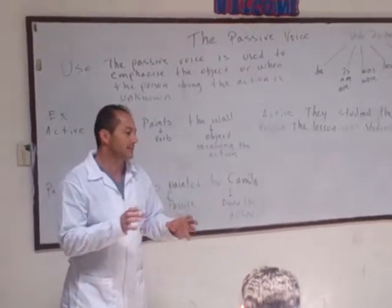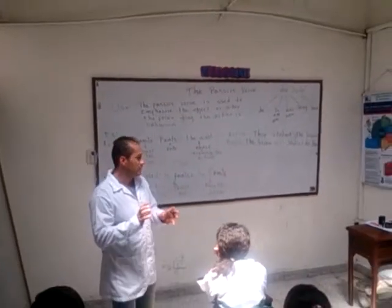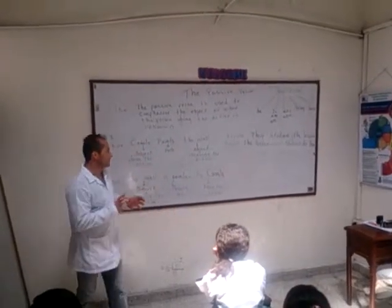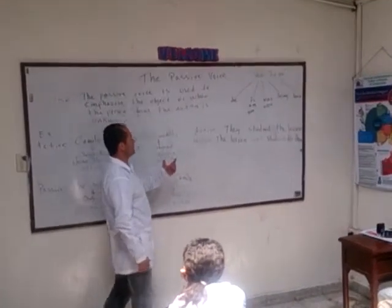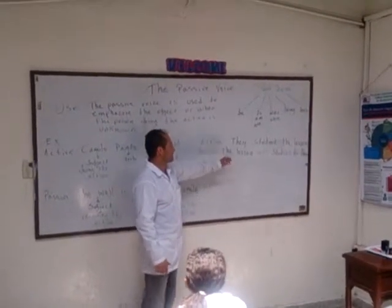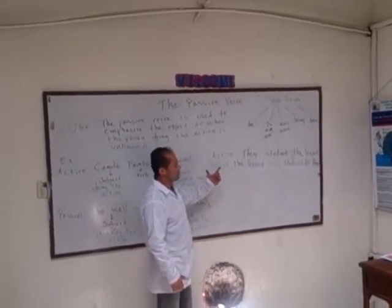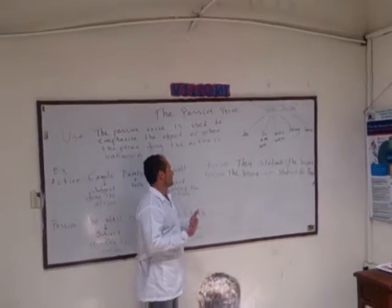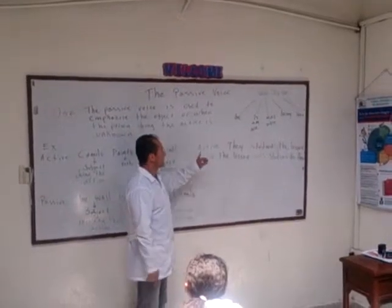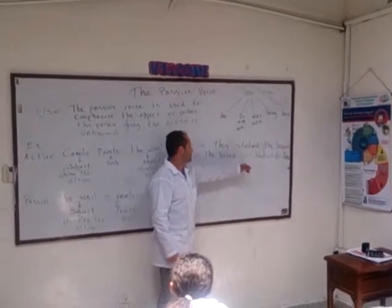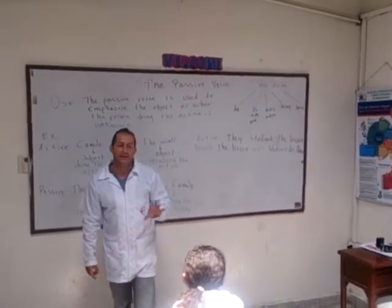We can write sentences in many tenses according to the information we have. Let's check this example in simple past: "They started the lesson." When you change it into passive voice, you have to use the passive verb to be: "The lesson was started by them."